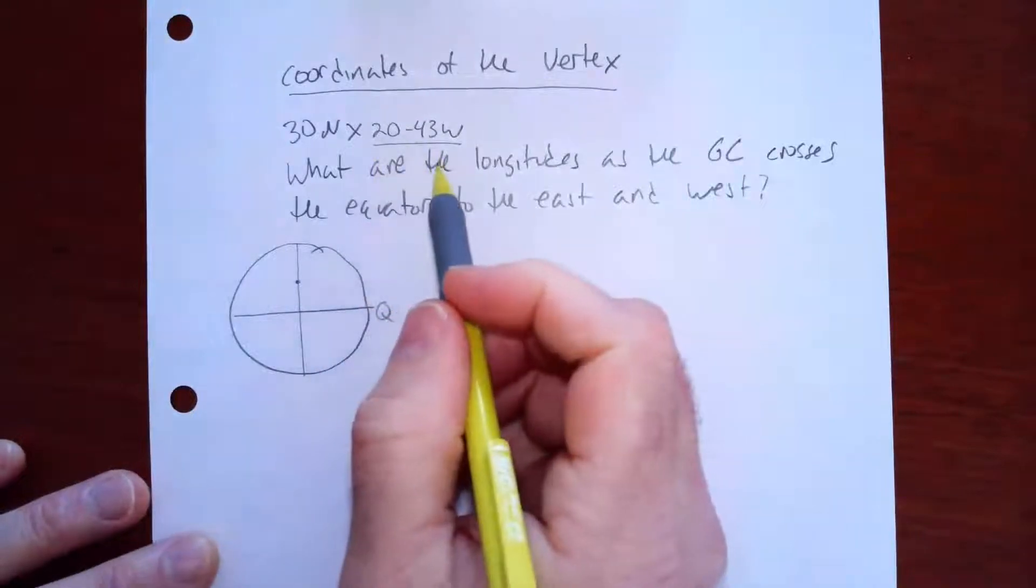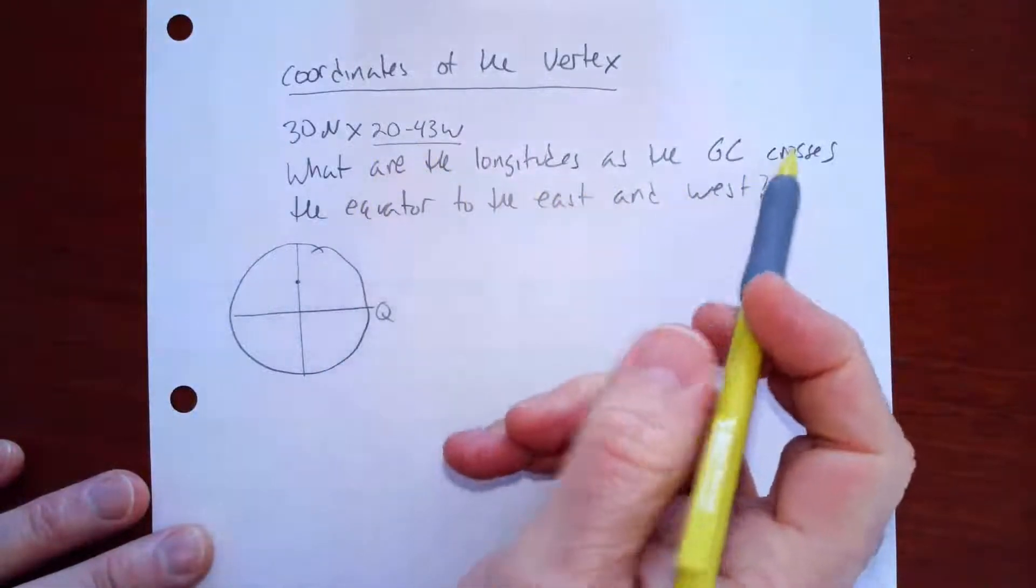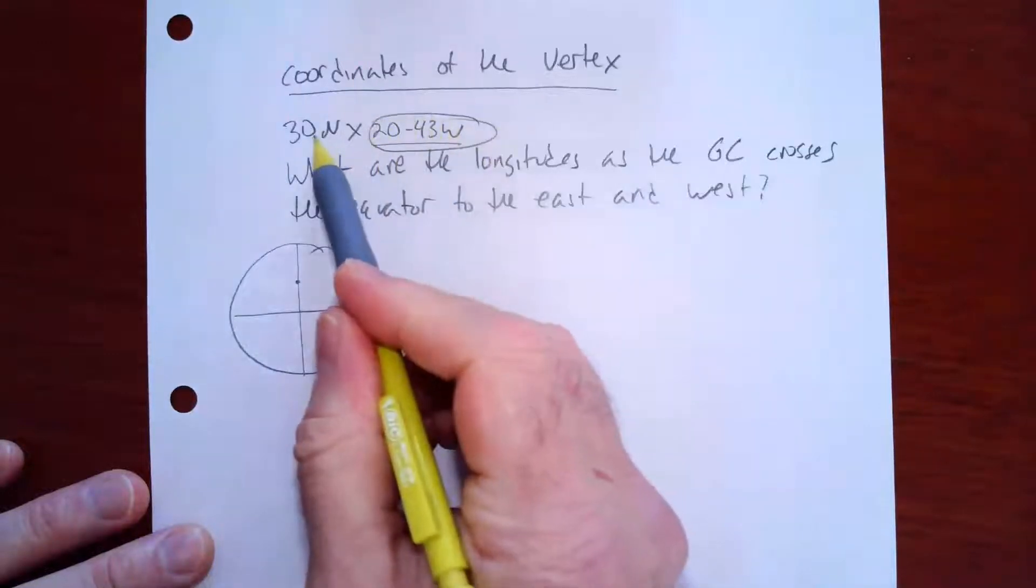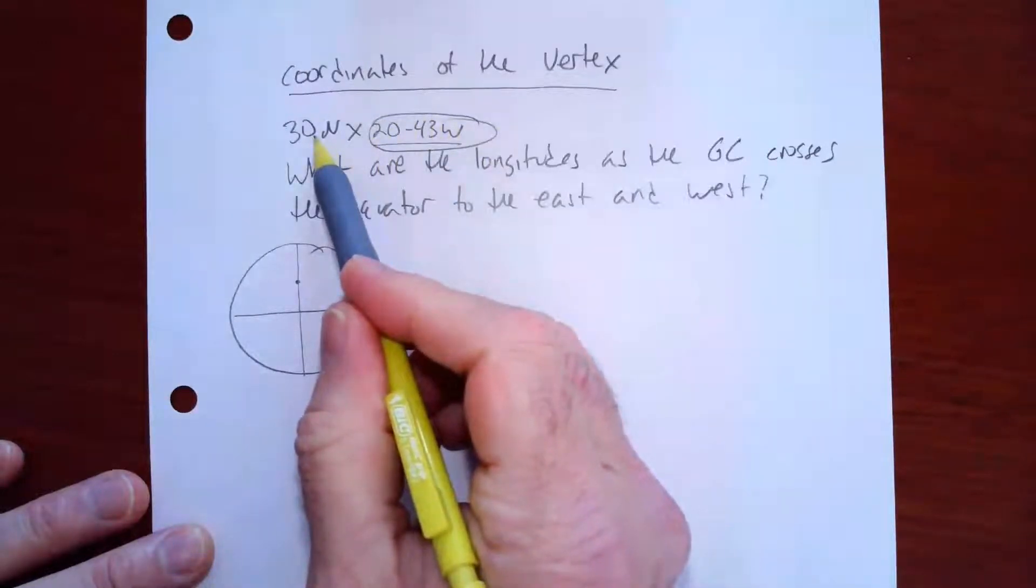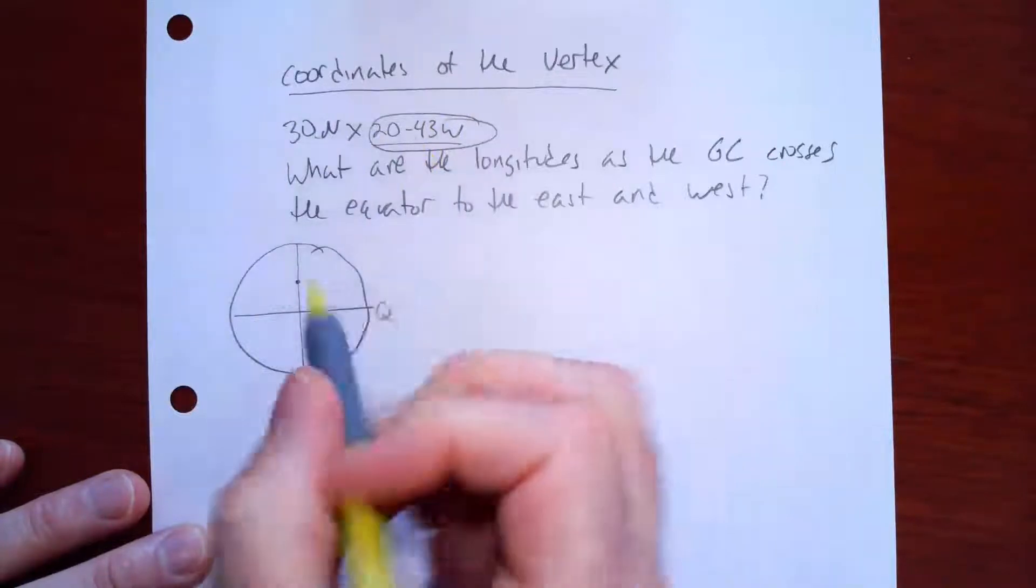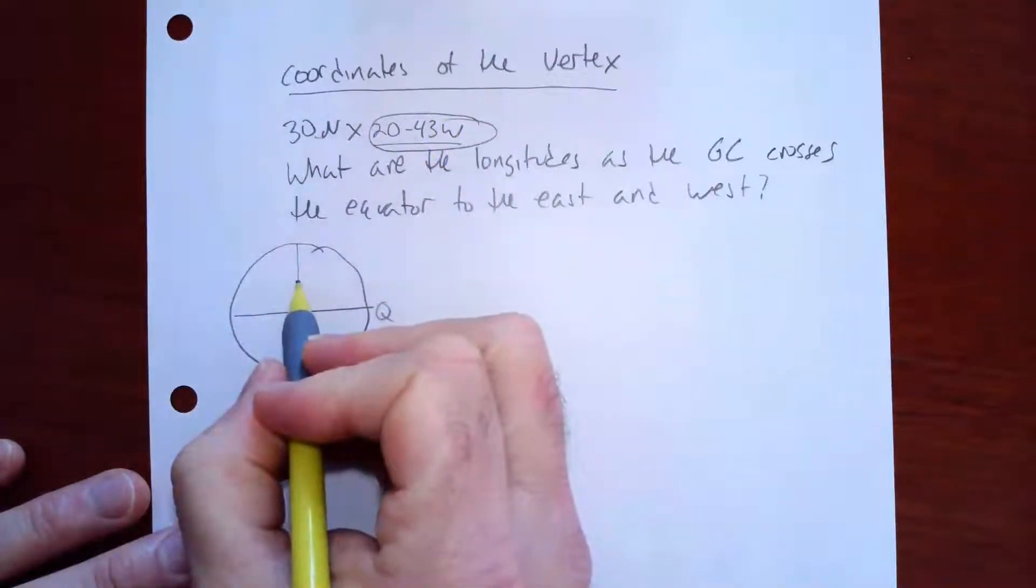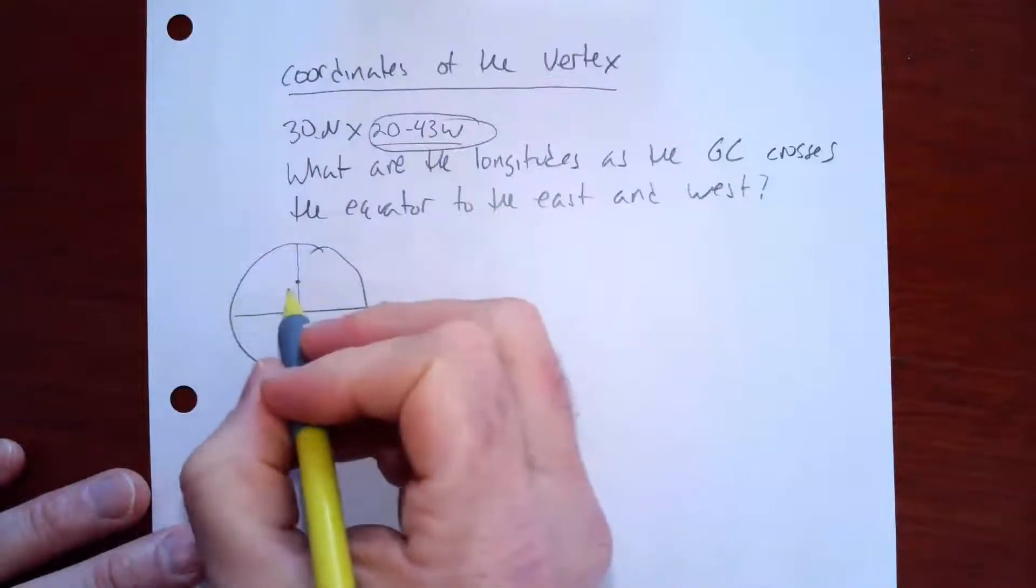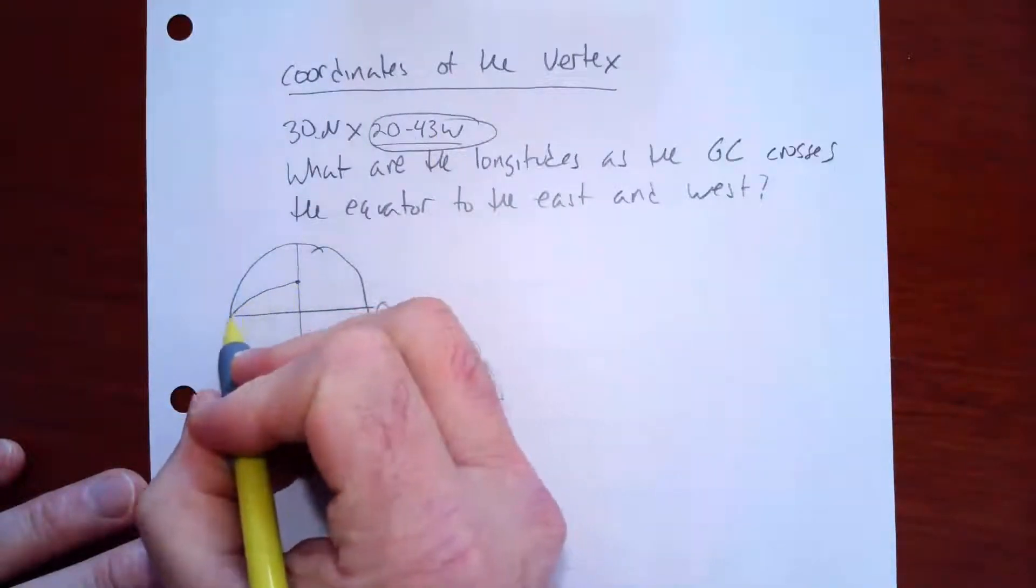So all I really need to answer what are the longitudes as the great circle crosses the equator to the east and the west, all I really need is this. I don't really care about the latitude itself of the vertex, because I know that if the great circle vertex is here, it's going to cross the equator 90 degrees to the east and 90 degrees to the west. So it would kind of look something like this.